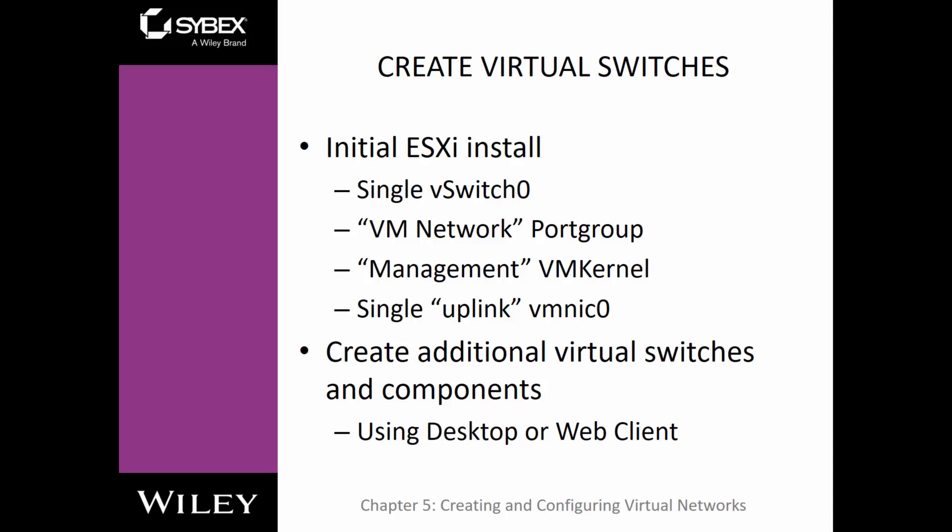To create a virtual switch: as long as we're using ESXi, we already have a single vSwitch 0 installed by default, along with a default vNetwork port group, a management VM kernel, and a single uplink — vMNIC 0 — as the default physical adapter. To manage or add components, use either the desktop client or web client. With vSphere 6, you'll likely need the web client, as VMware is becoming more web client dependent.